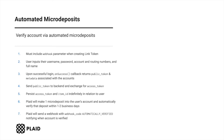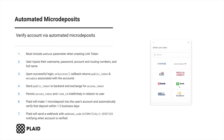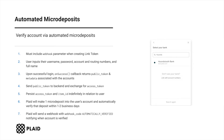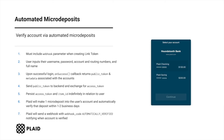For automated micro-deposits, it's required to include a webhook URL within the webhook parameter when creating the link token via the link token create endpoint, which is used to notify you when the user's account has been automatically verified. For this flow, users enter their credentials, full name, and account and routing numbers in PlaidLink.